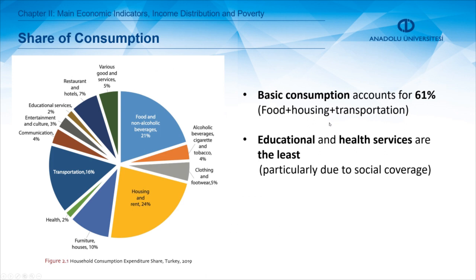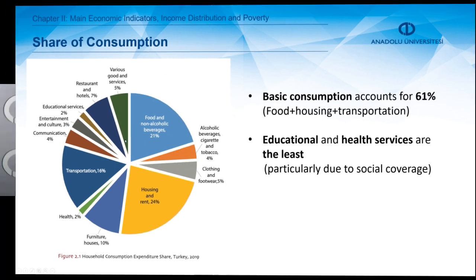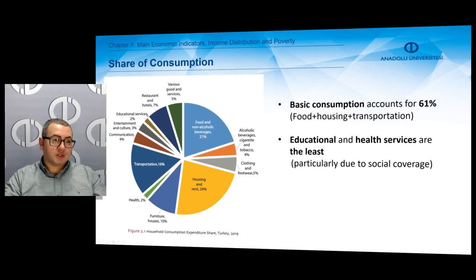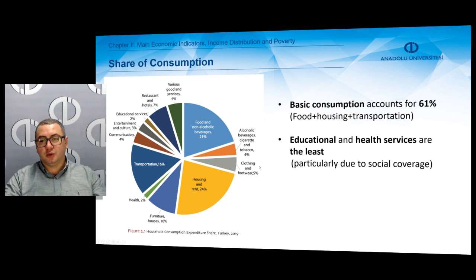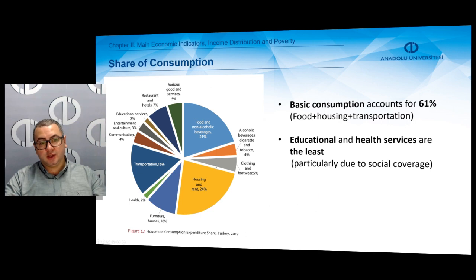Food, housing, and transportation are basic consumption items. Educational services account for 2 percent and health accounts for another 2 percent — these are small numbers in comparison, mainly due to social coverage, which covers about 71 to 81 million people as of 2018.